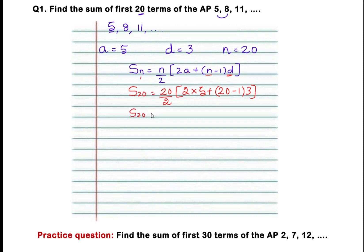S20 equals 10 times, 2 fives are 10, plus 20 minus 1 is 19 into 3. S20 equals 10 times 10 plus, what is 19 times 3? 19 into 3 gives 57. First we multiply then we add 10, so S20 equals 10 times 10 plus 57 which is 67.